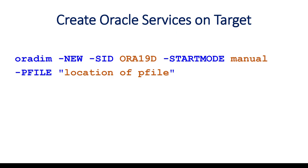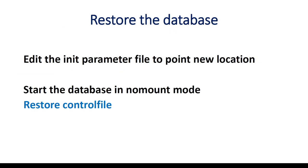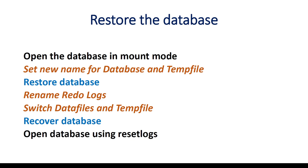Once the directories are created, create an Oracle service on the target using the ORADIM command: oradim new, SID name of the SID, start mode, P file, and the location of your P file copied from the source server. Then change the init parameter file to point to the new location of FRA and the new location of your control file. Once the init file is changed, start the database in no mount mode, restore the control file, open the database in mount mode, set the new name for database and temp file, restore the database, rename the redo logs, switch data files and temp file, recover the database, and open the database using reset logs.